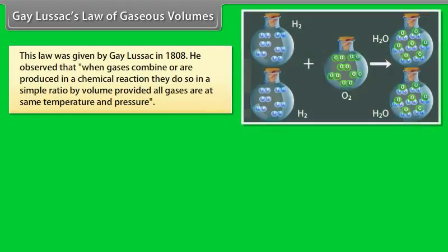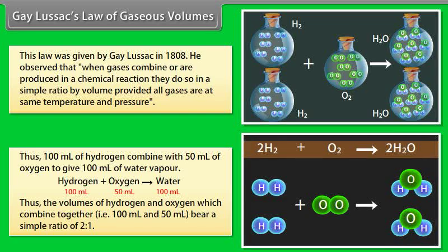Gay-Lussac's Law of Gas Volumes. This law was given by Gay-Lussac in 1808. He observed that when gases combine or are produced in a chemical reaction, they do so in a simple ratio by volume, provided all gases are at the same temperature and pressure. For example, 100 ml of hydrogen combined with 50 ml of oxygen to give 100 ml of water vapor — a volume ratio of 2:1.